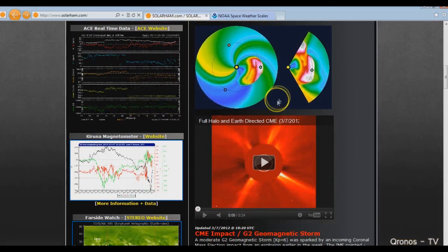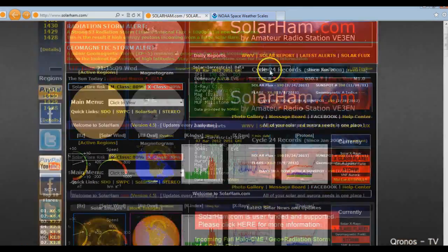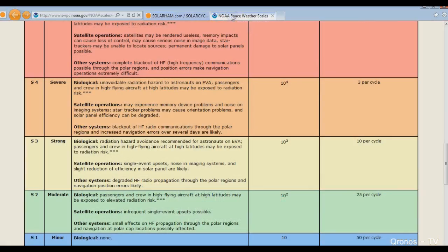Okay, this thing is headed straight toward us. Now, what is an S3 radiation storm that's going on right now? What is that? Well, an S3 radiation storm is a biological radiation hazard. Avoidance recommended for astronauts up in space.